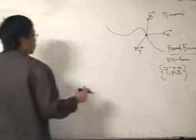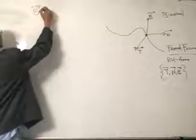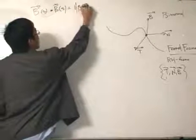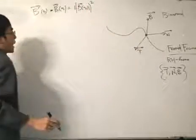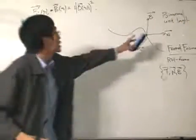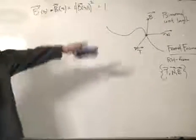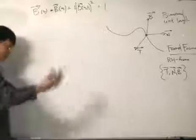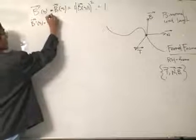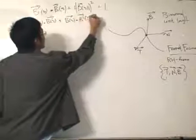Using the dot product: when we dot a vector with itself, we get the magnitude of that vector squared. In this case, let it be the binormal vector: B · B equals the magnitude of B squared. Since the binormal is of unit length — just like the unit tangent and unit normal — this equals 1. We can now differentiate this expression, and applying the product rule gives us: dB/ds · B + B · dB/ds = 0, which simplifies to 2(dB/ds · B) = 0.